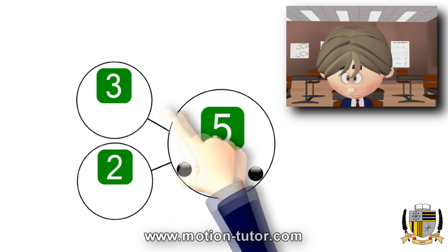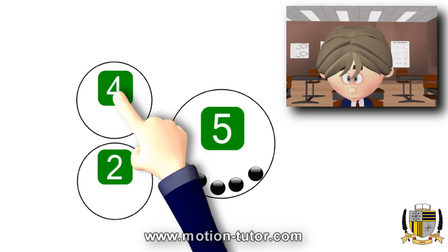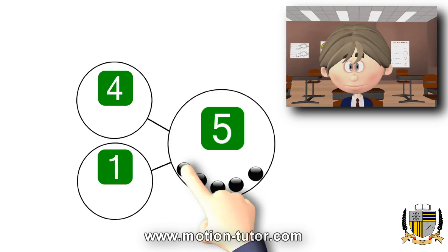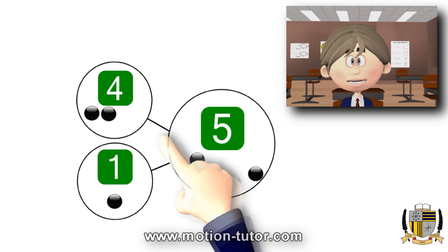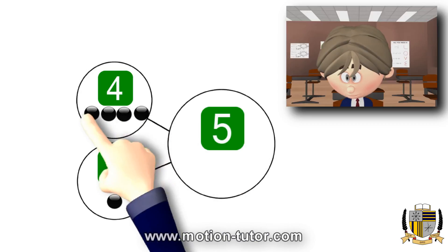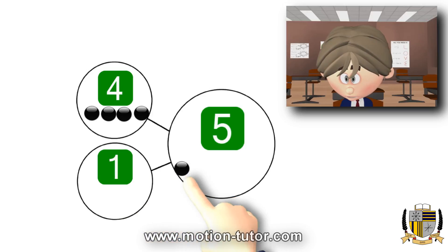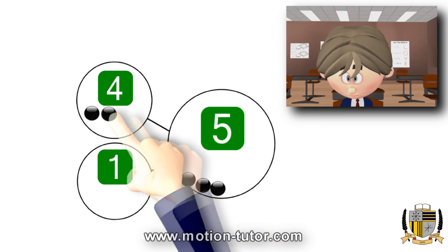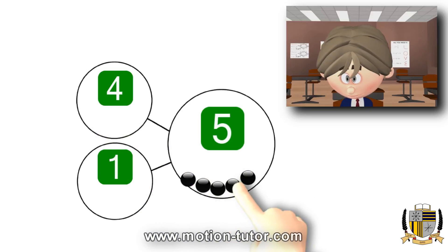I want to show you something else. You can also make five by doing something else. What if we have four and one? As you can see, four in here and one down here — it is one, two, three, four, five. So it's still five.